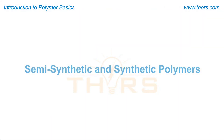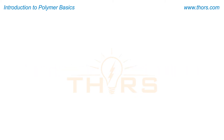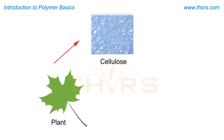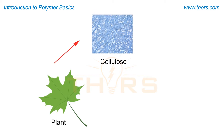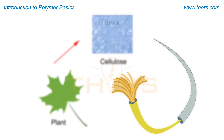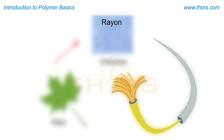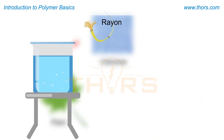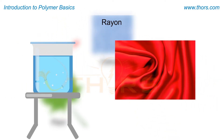Semi-synthetic and synthetic polymers are man-made industrial polymers created for everyday use. Semi-synthetic polymers are created by chemically modifying natural polymers. For example, rayon is a semi-synthetic polymer produced by modifying naturally occurring cellulose.